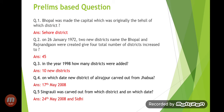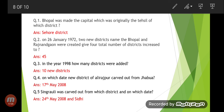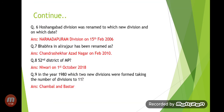In 1998, new districts were added. The new district of Alirajpur was carved out from Jhabua — when was it formed? It was formed on 17th May 2008. Singrauli was carved out from which district and on which date? Singrauli was carved out from CD (Sidhi) district and was formed on 24th May 2008.